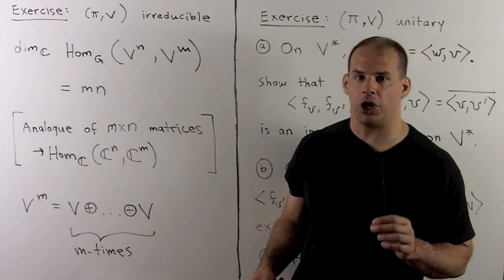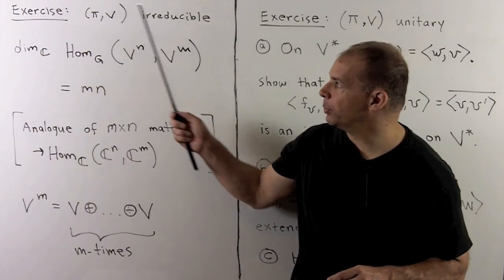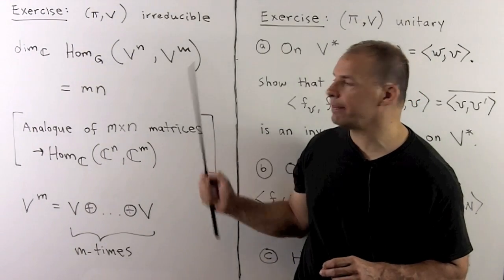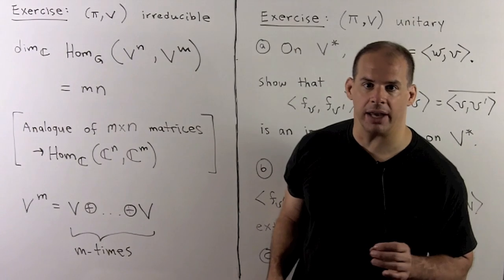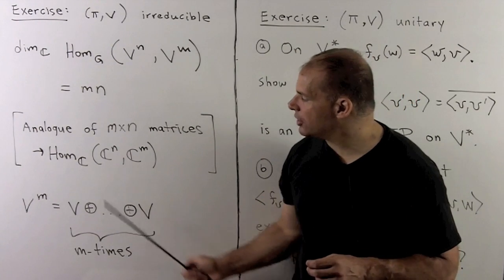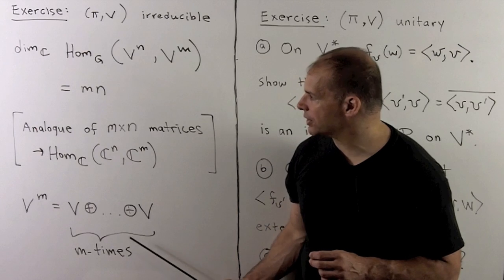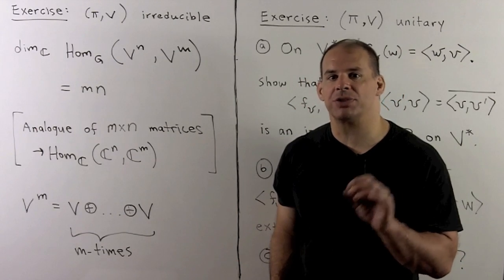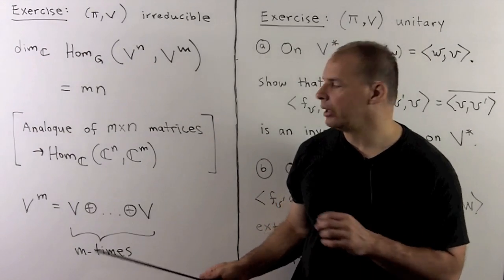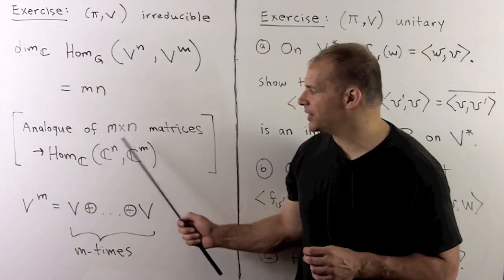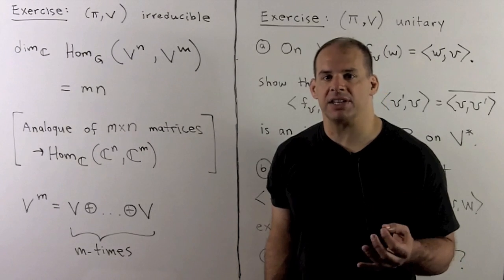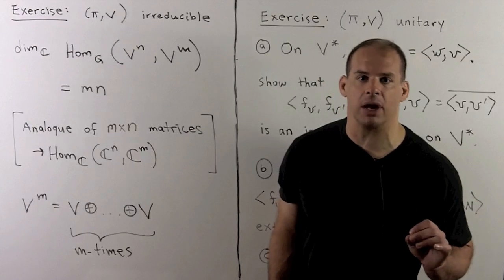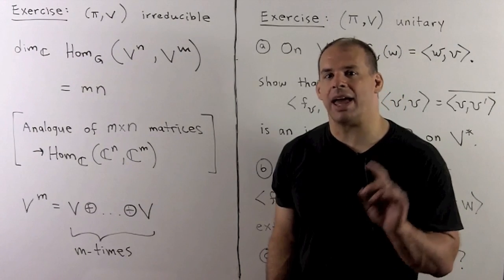Another application of Schur's Lemma: assume pi V is irreducible. Show that the dimension of the space of intertwining operators from V^n to V^m is equal to m times n, where V^m is the direct sum of V with itself m times. This is analogous to counting dimensions for a linear transformation space — linear transformations from C^n to C^m, fixing a basis, give an n-by-m matrix over the complex numbers, with dimension mn.